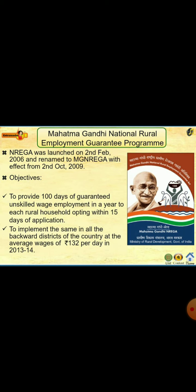MGNREGA — Mahatma Gandhi National Rural Employment Guarantee Program — was launched on 2nd February 2006 and renamed to MGNREGA with effect from 2nd October 2009. Its main objectives are to provide 100 days — and the government is planning to increase this to 150 days — of guaranteed unskilled wage employment in a year to each rural household, with a 15-day application window, to be implemented in all backward districts at an average of Rs. 132 per day as of 2013-14.